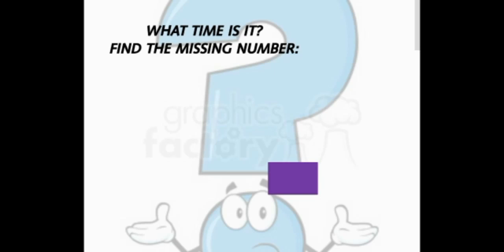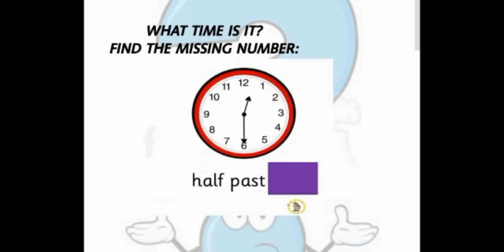Now what time is it? Find the missing number. Yes. Here we have a clock. And it is half past what? 1, 3, 1, 4, 12, and 5.